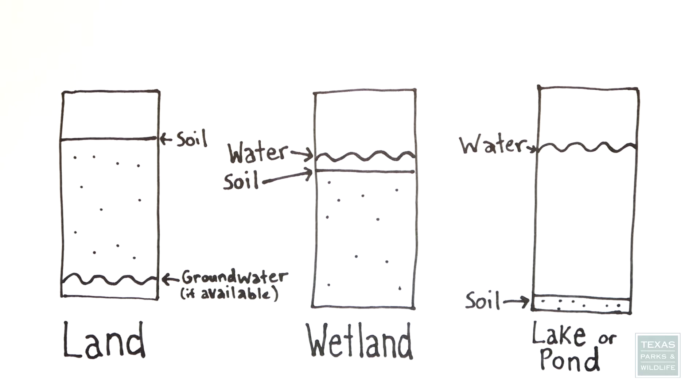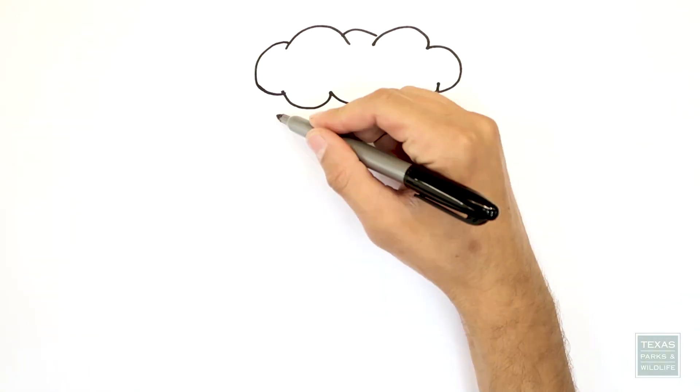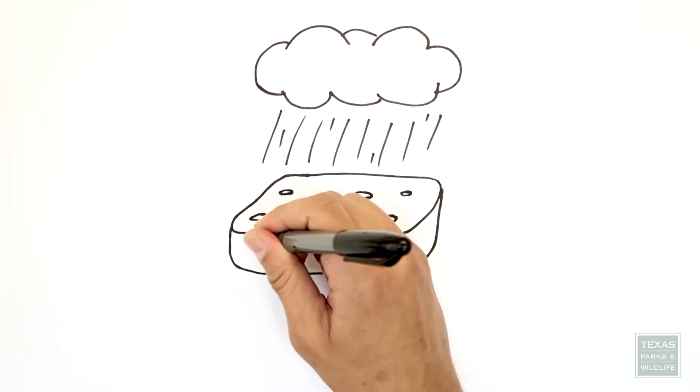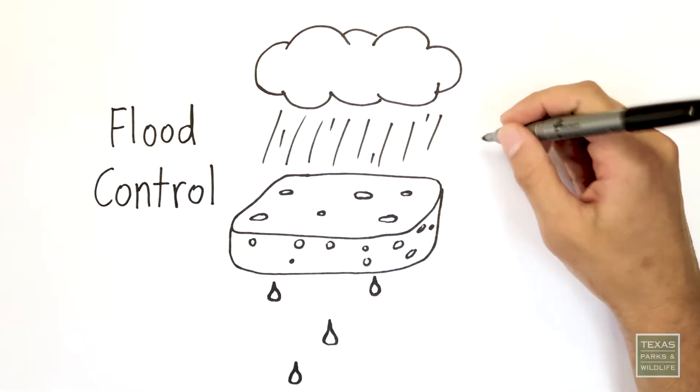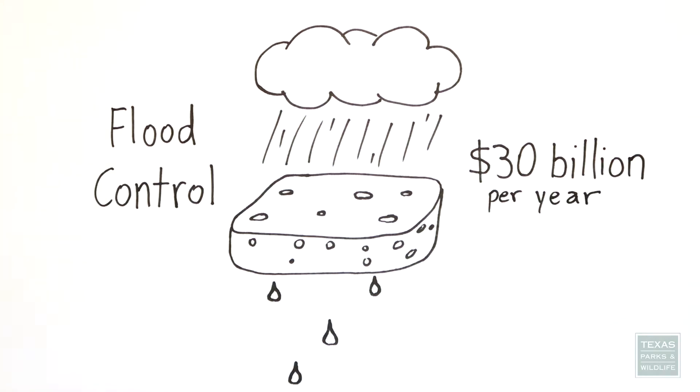Wetlands come with some really great benefits. Wetlands collect floodwater, help stem the flow, and slowly release it so it doesn't do so much damage. In fact, for this very reason, developers who convert wetlands for human use are now required to offset their impact with water retention systems. Wetlands save up to $30 billion a year in flood-related repair costs in the United States alone.